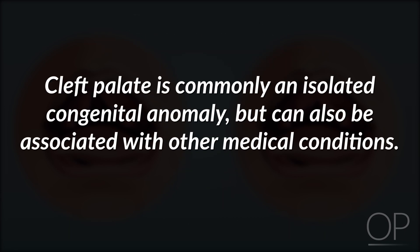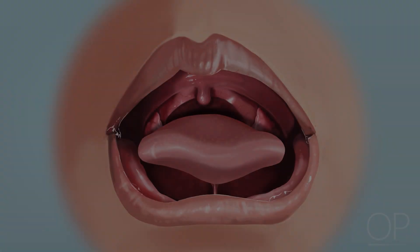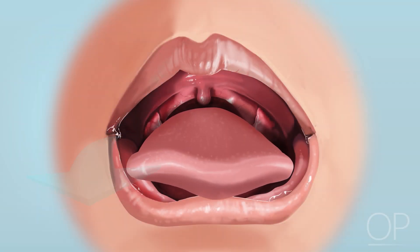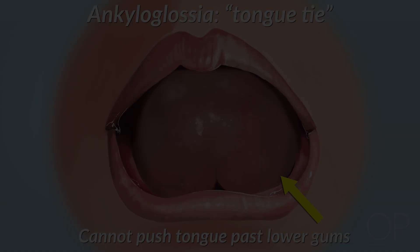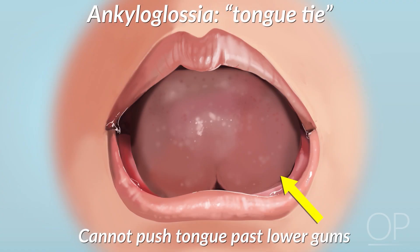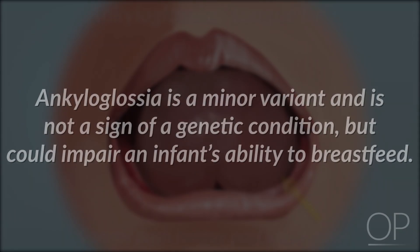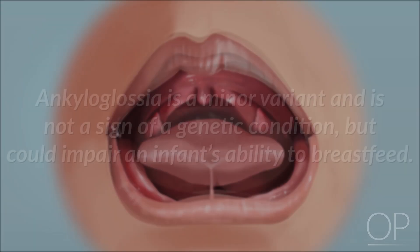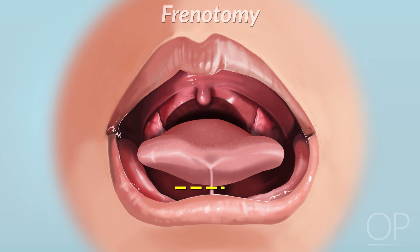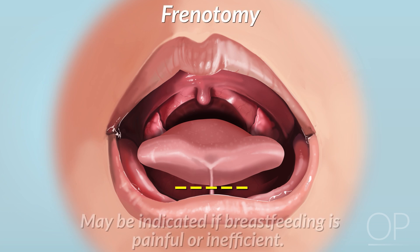Cleft palate is commonly an isolated congenital anomaly, but can also be associated with other medical conditions. Next, assess her tongue. Is she able to elevate her tongue and push it past the lower gums? If not, she may have ankyloglossia, more commonly known as tongue tie. This finding is a minor variant and is not a sign of a genetic condition, but could impair the infant's ability to breastfeed. A frenotomy, or release of the frenulum, may be indicated if breastfeeding is painful or inefficient.